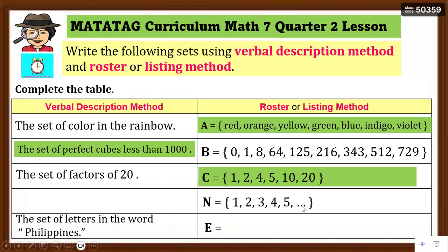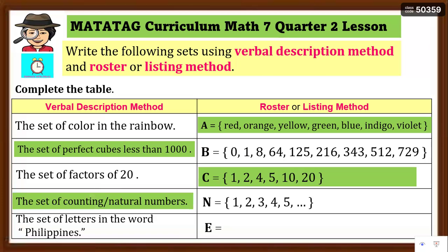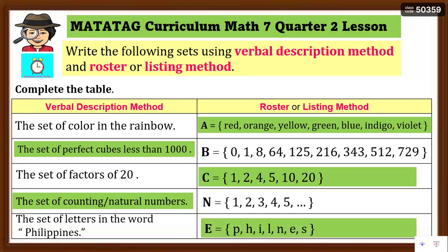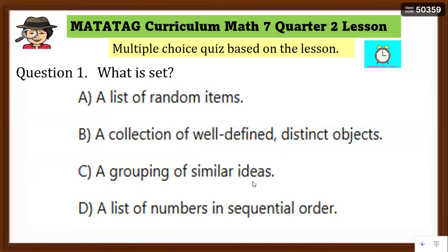The listing {1, 2, 3, 4, 5, ...} with an ellipsis — the verbal description is: the set of counting or natural numbers. For the set of letters in the word 'Philippines' in roster form: remember, repeated letters are written only once. So the elements are P, H, I, L, N, E, S — written as {P, H, I, L, N, E, S}.